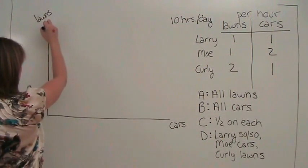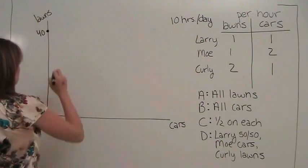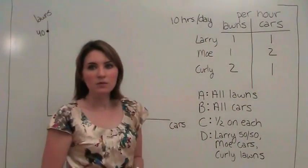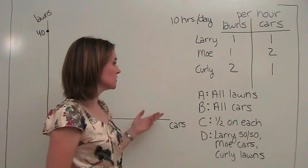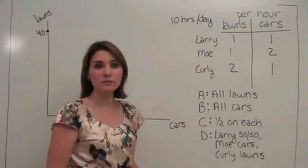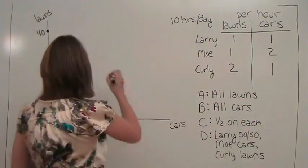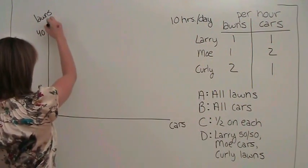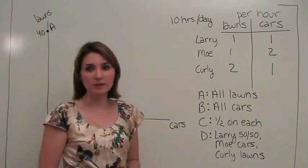We can represent that by this point here. We get forty lawns mowed if that's all we're doing, meaning that we are washing zero cars. This is point A on our production possibilities frontier.